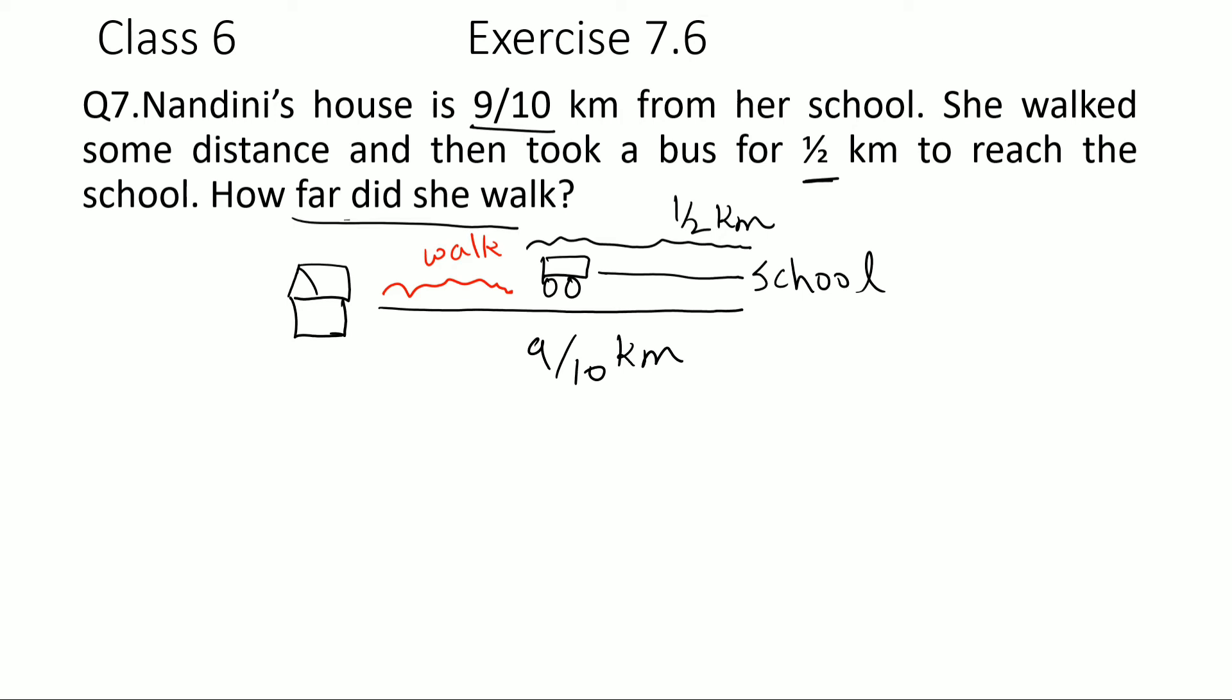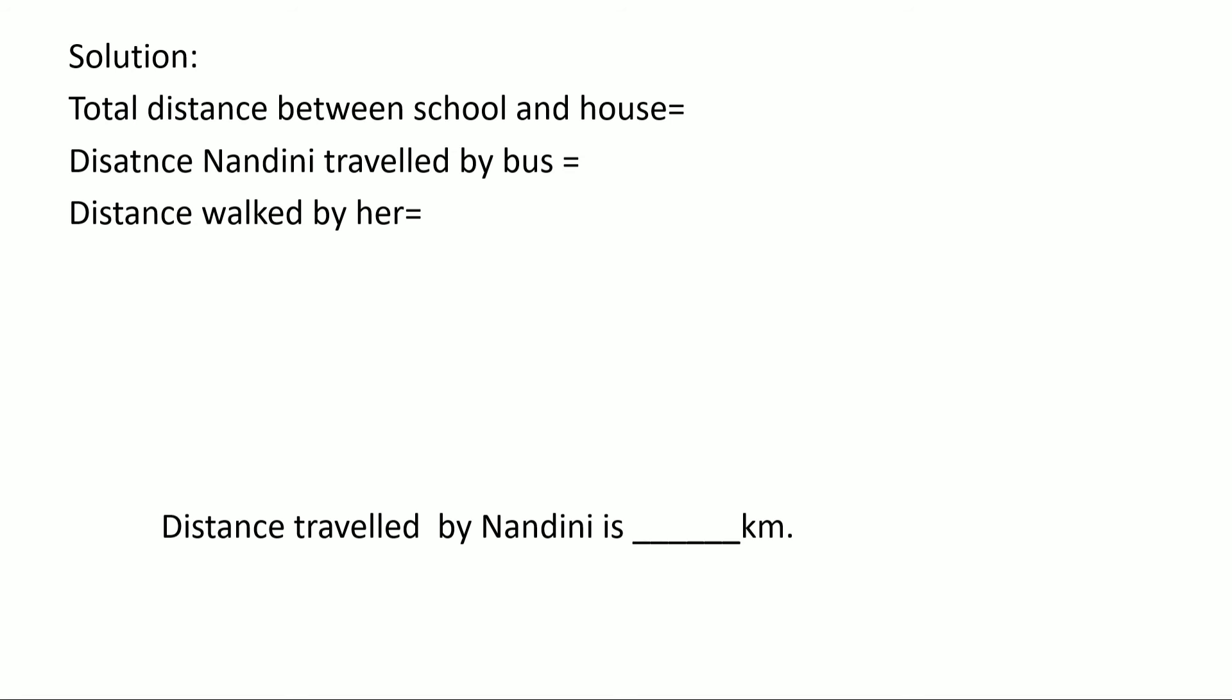How far did she walk? We need to find out this distance between the house and the place where she has taken the bus. So we can see that the total distance is 9/10 kilometer and she has traveled by bus for 1/2 kilometers, so if I subtract these two I would get my solution. Let's write the statement.